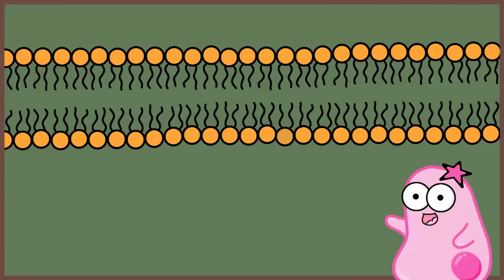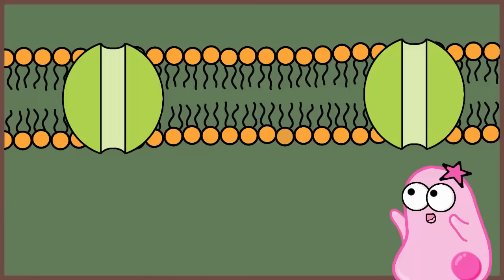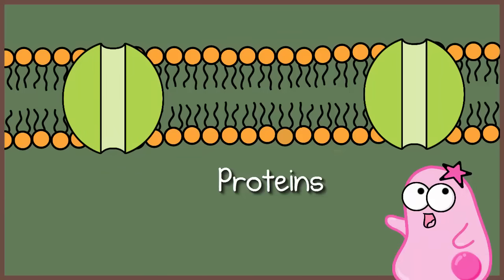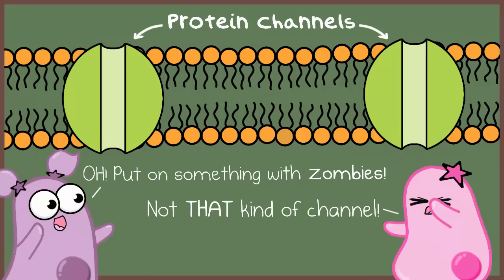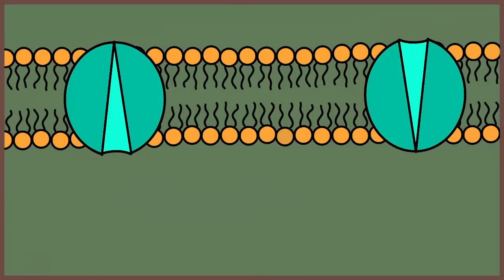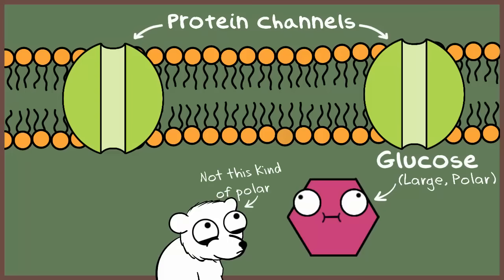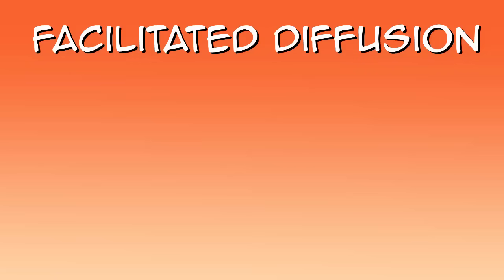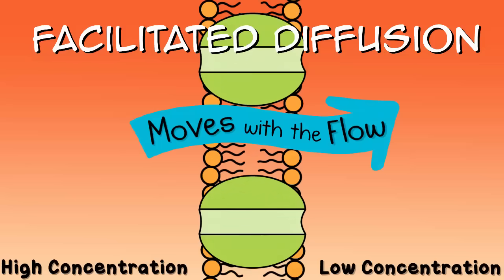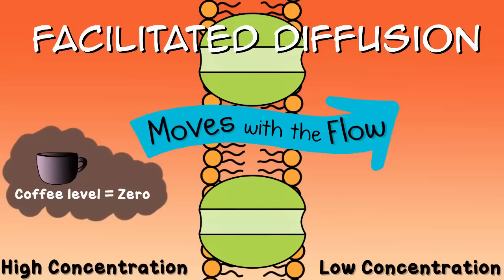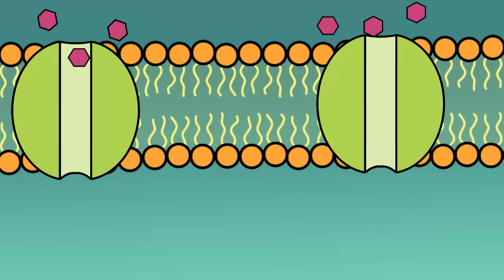Remember how we said the cell membrane is actually a pretty complex structure? One thing we haven't mentioned yet are proteins in the membrane, and some of them are transport proteins. Some transport proteins act as channels; some actually change their shape to get things across; some open and close based on some kind of stimulus. This helps with molecules that may be too big to cross the membrane on their own, or molecules that are polar and therefore need the help of a transport protein. This is known as facilitated diffusion. It doesn't require energy, so it's also a type of passive transport—the proteins are just facilitating, or helping, things pass.